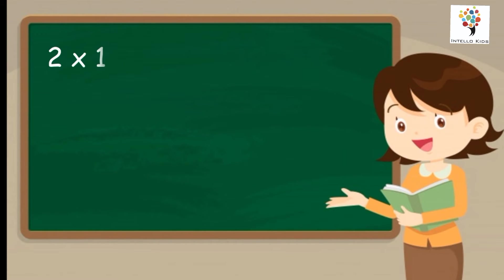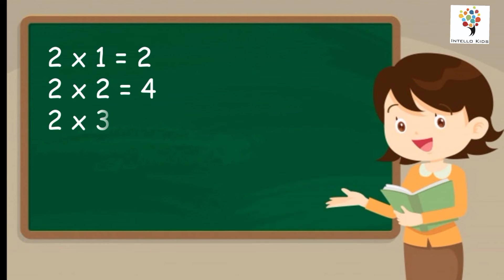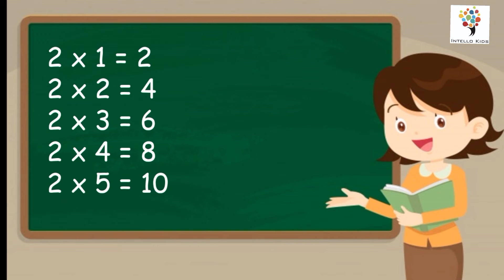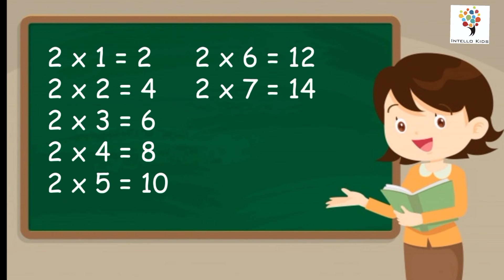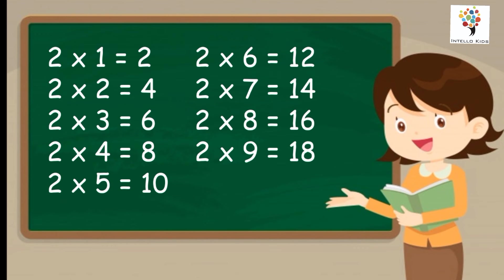Two ones are two. Two twos are four. Two threes are six. Two fours are eight. Two fives are ten. Two sixes are twelve. Two sevens are fourteen. Two eights are sixteen. Two nines are eighteen. Two tens are twenty.